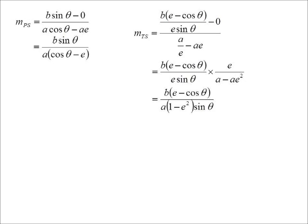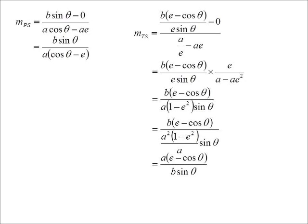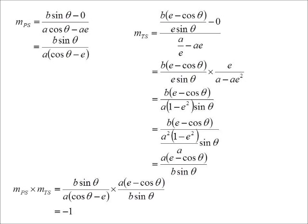Now a(1 − e²) is very close to something useful. We know a²(1 − e²) = b², so a(1 − e²) = b²/a. Substituting this in, the b² cancels with the b and the a moves to the top, giving slope TS = a(e − cos θ)/(b sin θ). Looking at the two slopes: when we multiply them together, everything cancels nicely and leaves −1. So yes, indeed the angle is 90 degrees.